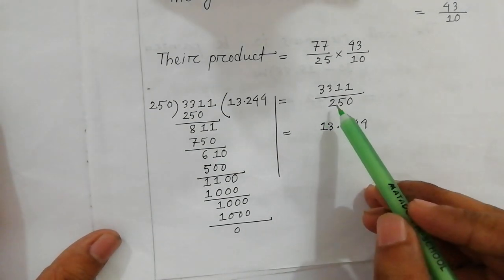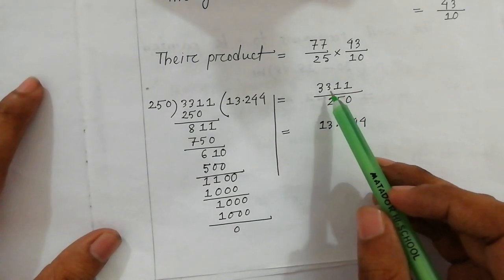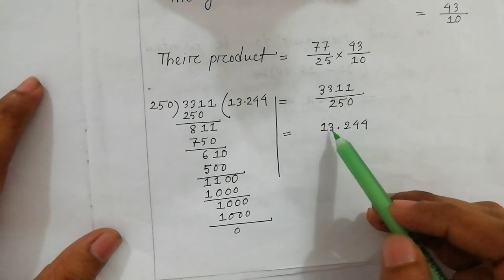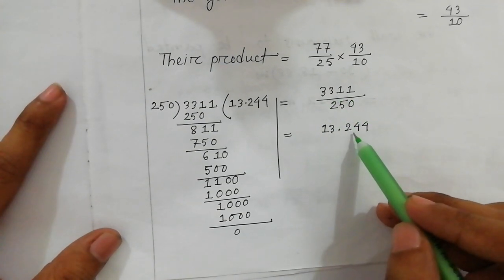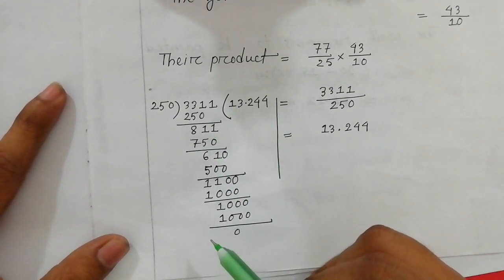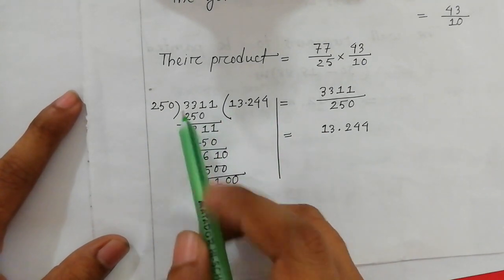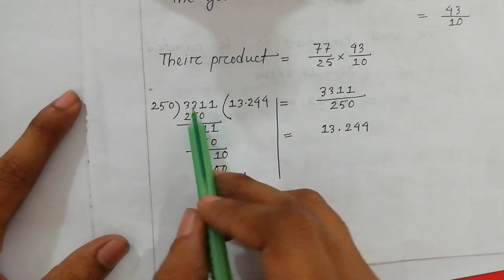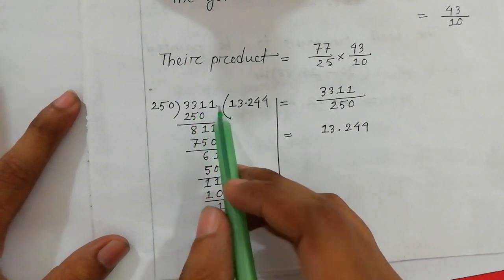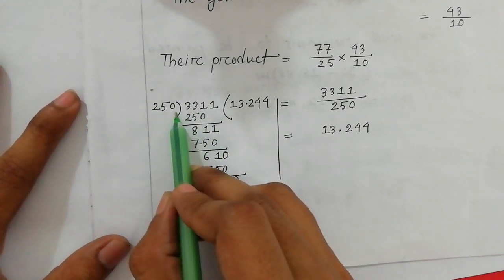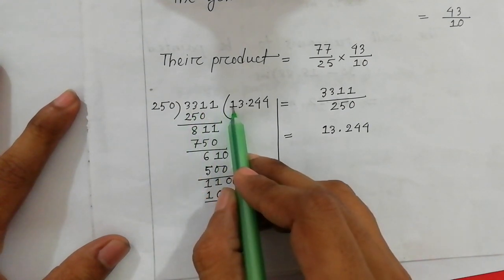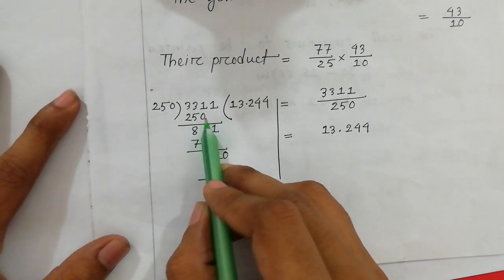The result is 3311 divided by 250. Performing the division: 330 divided once by 250, subtract to get the remainder, and continue the long division to find the decimal result of 13.244.